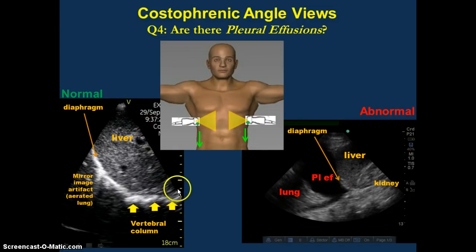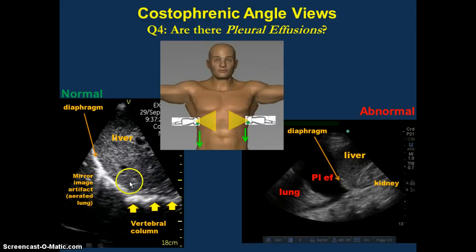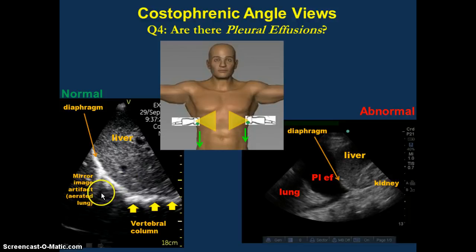This side correlates with down towards the feet, and this side is up towards the head. Closer to the probe over here is lateral, and deep to the probe is medial. On the right-hand side, you're going through the liver and then hitting the vertebral bodies as they move midline — those are these white lines here. In between, you see this bright white line — that's the diaphragm. With normal aerated lung, you get a mirror image artifact where it looks like there's liver on the other side of the diaphragm. When you have a pleural effusion, you get this black fluid above the diaphragm, and you can clearly see the lung outlined by this black fluid.